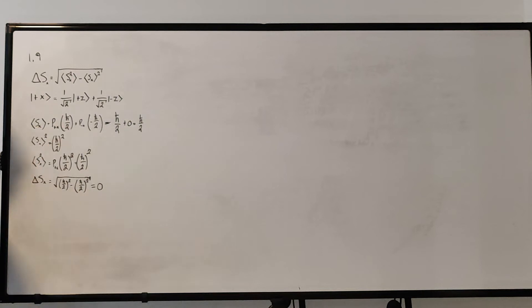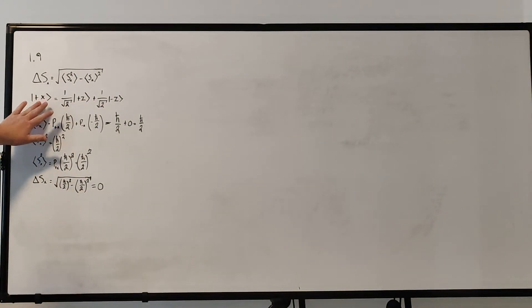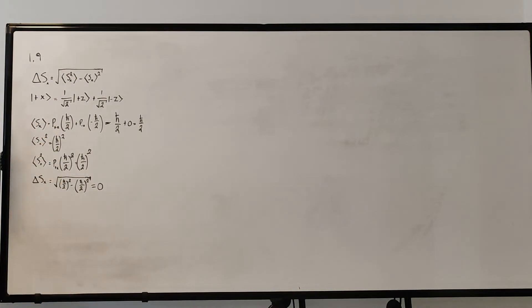So this is the plus x state, and I wrote it in terms of plus z, but we really don't need this. We just need to know that we're in the plus x state. So the expectation value of the x component of spin, well, the expectation value is just the probability of measuring plus x times h bar over 2.